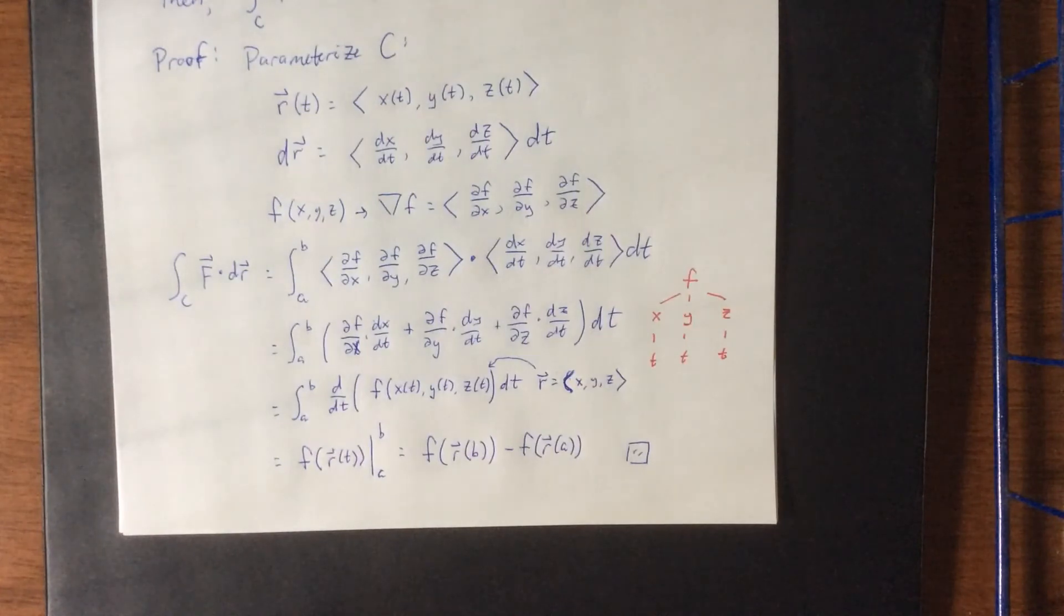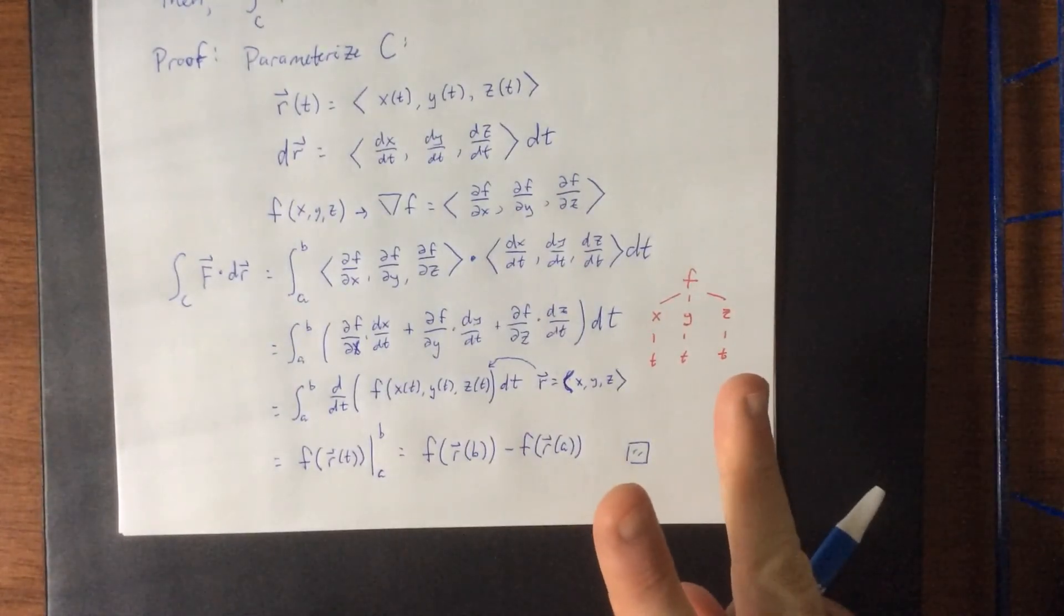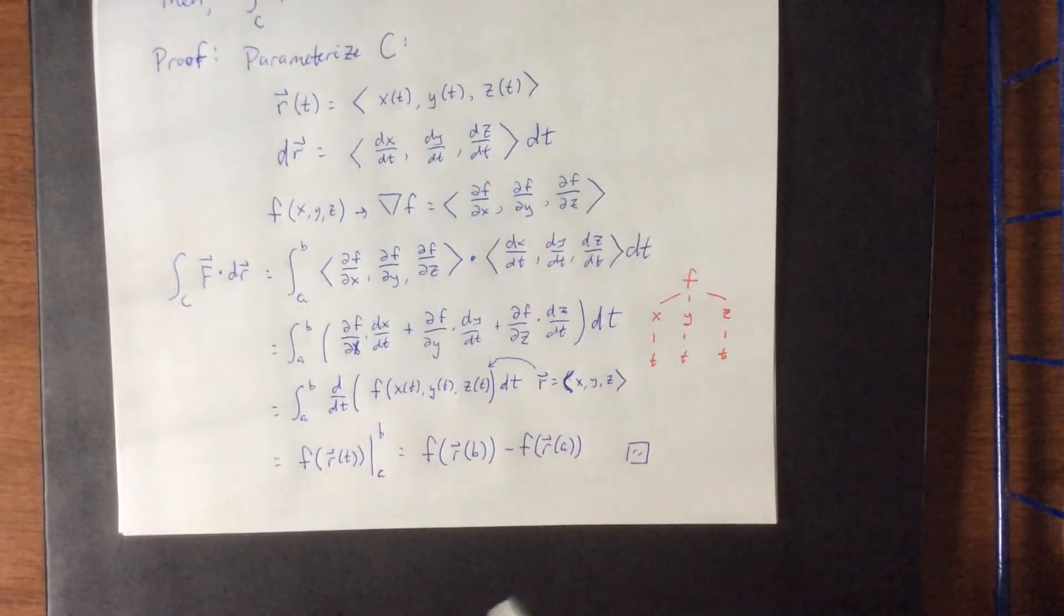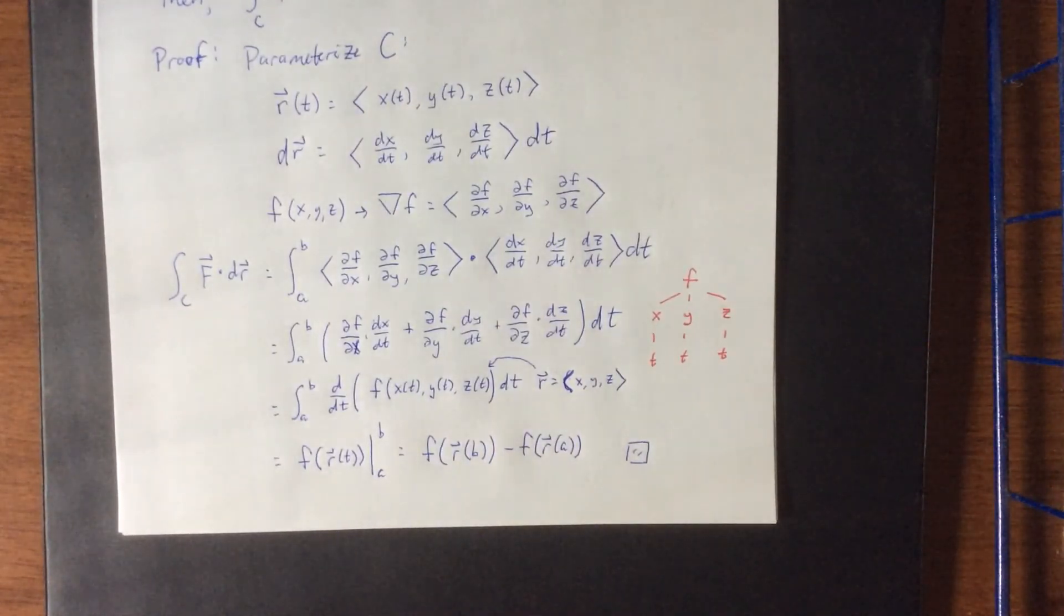So if you know that you're dealing with a conservative vector field and you can determine the generating function, then this gives you a major shortcut in determining what the value of a line integral is. Now, of course, this poses a couple of important questions. First one being, how do you tell if a vector field is conservative? And two, once you determine that it is conservative, how do you determine the generating function F? We will talk about those in the next video.